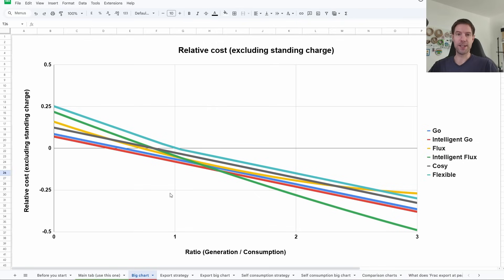If you didn't generate quite as much—if you were closer to one-to-one, so you're generating about the same amount as you're consuming—for us that would be March; for a lot of people that might be most of the summer if you've got a smaller array. We've got a very big array so we tend to generate more than we need in summer. But if you're generating the same amount as you're consuming in a particular month, this chart would suggest Intelligent Go is the best option, followed by Go, then Flux and Intelligent Flux, and finally Cozy and Flexible bringing up the rear.